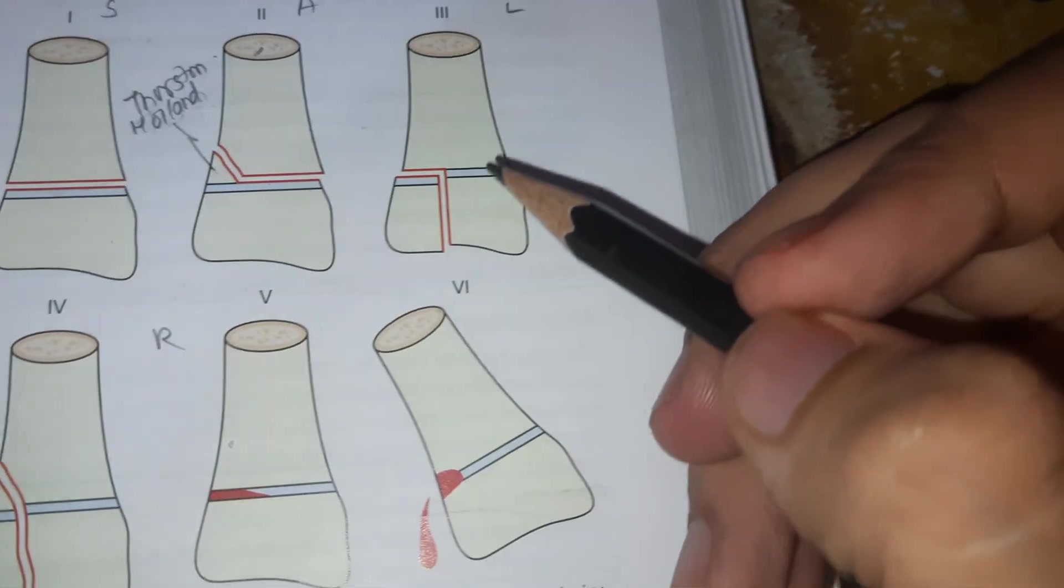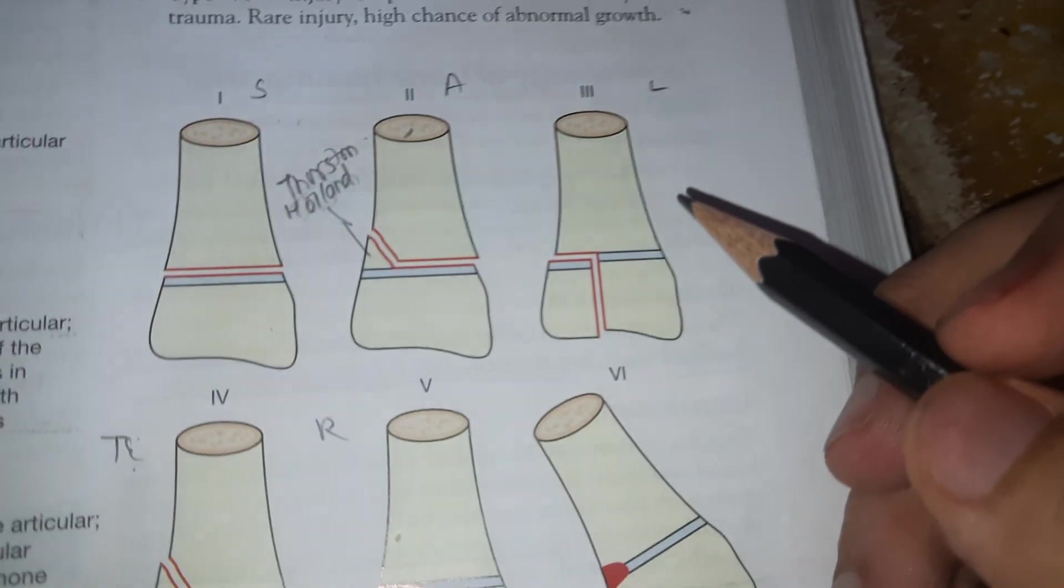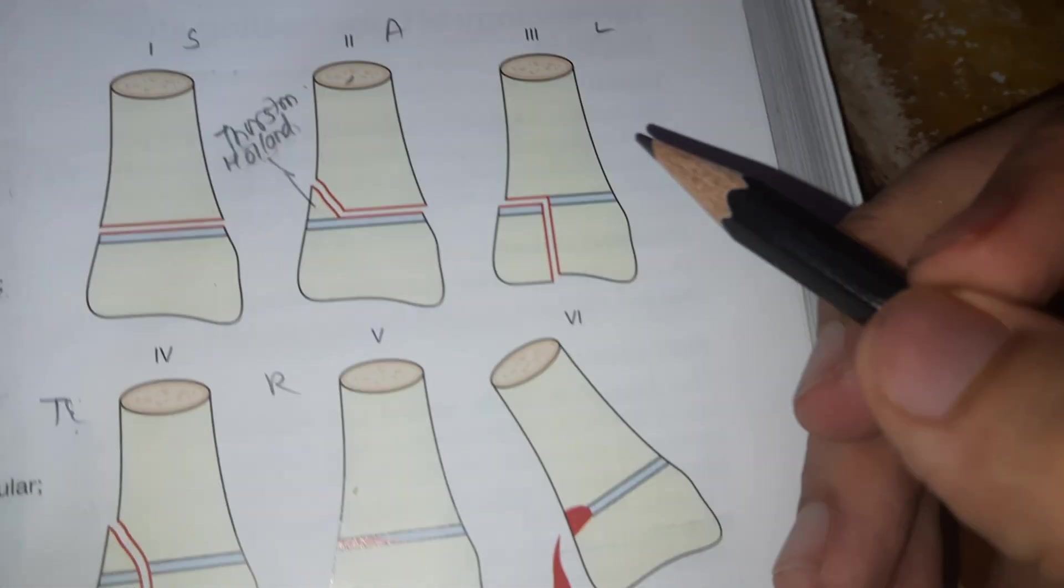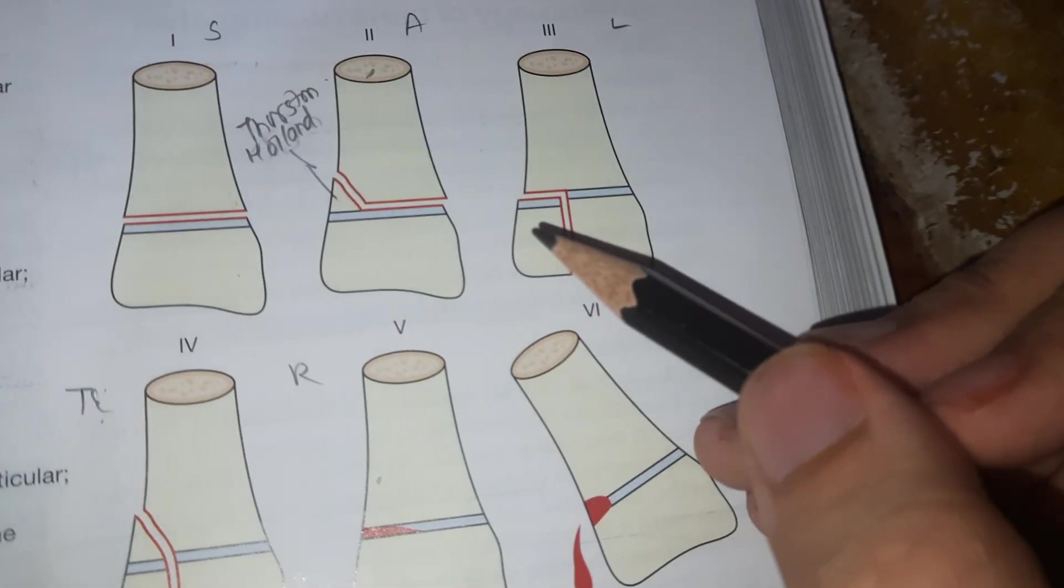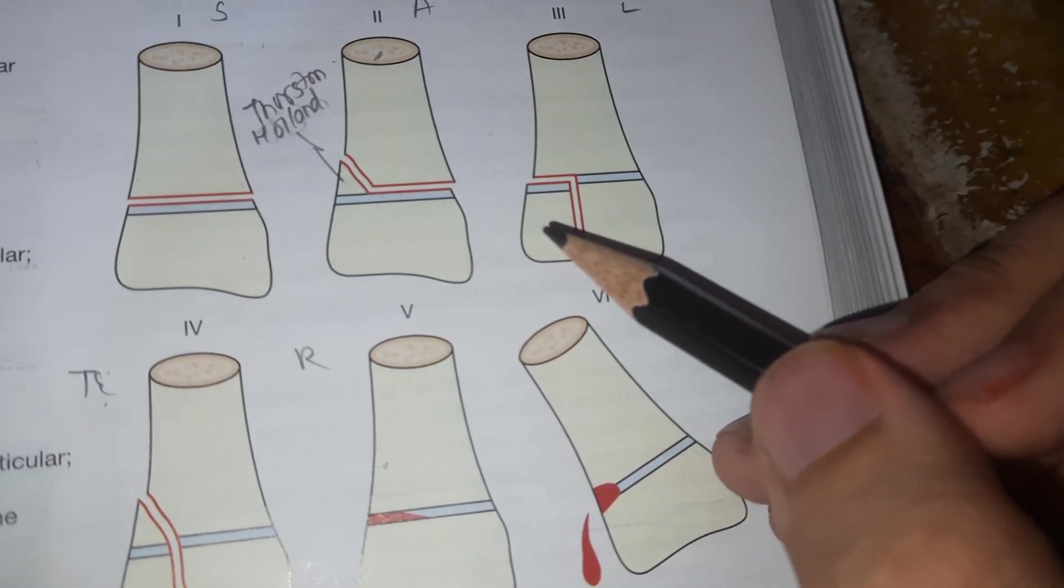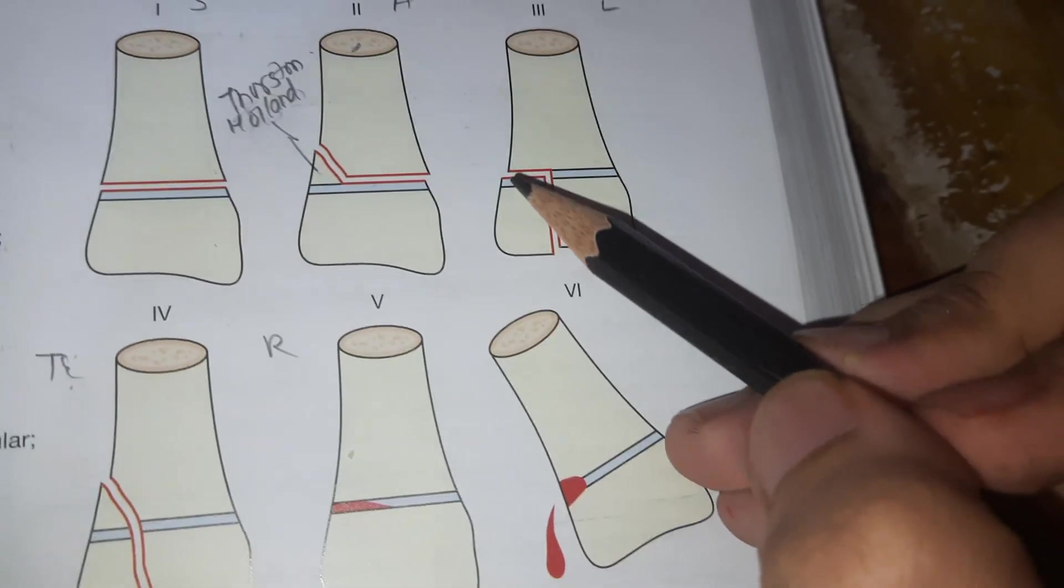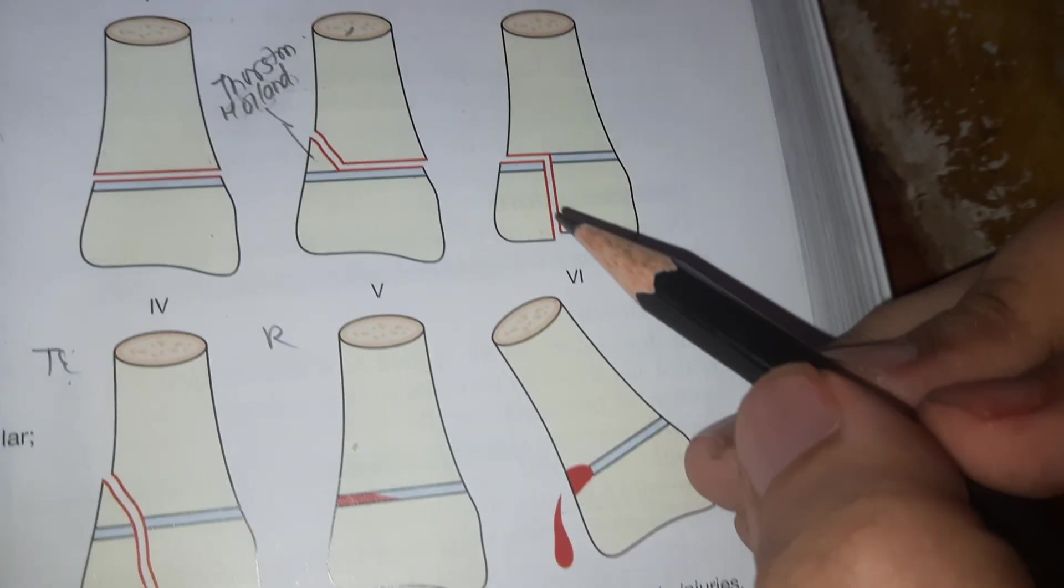In third type, that is Type 3, the fracture line through the physis exits through the epiphysis, that is below. L for low. It injures the germinal layer and has poor prognosis.